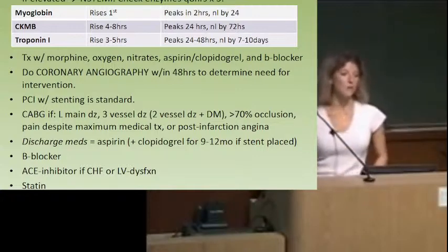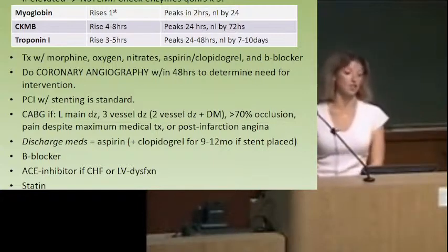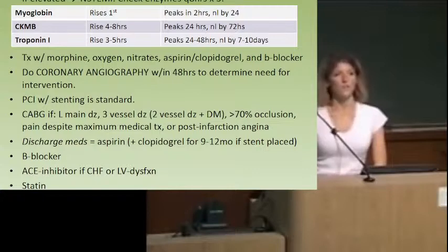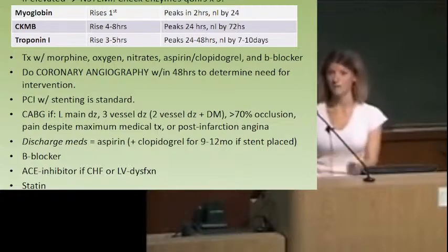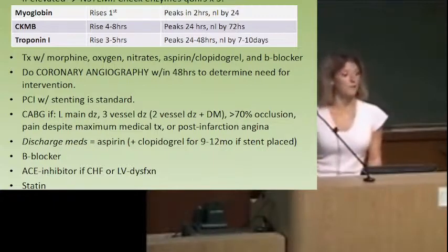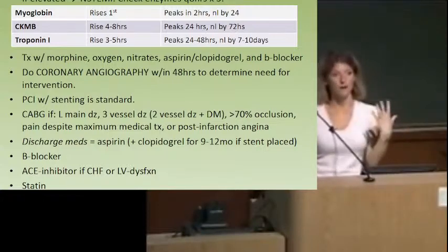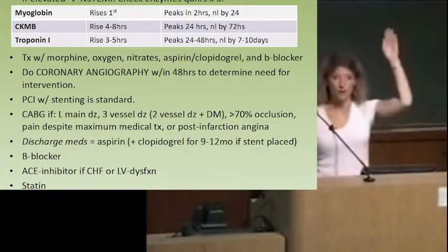We check every six to eight hours to detect a trend. Myoglobin is the one that rises first — it also drops off first. So if you get a question about a patient who had an MI and you're watching them, the most sensitive marker for a repeat infarction is myoglobin, because CK-MB and troponin can both still be elevated from the first heart attack.